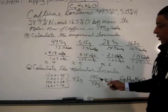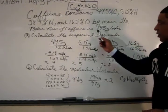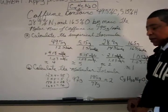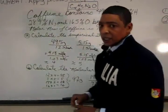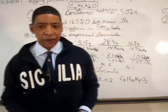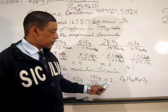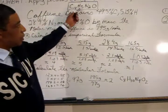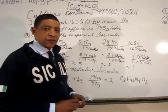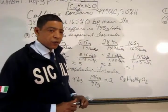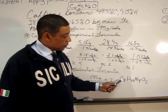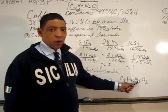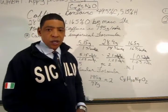To determine the molecular formula, first determine the mass of the empirical formula, which is 97 grams per mole. The molar mass of the molecular formula, 195 grams, divided by the mass of the empirical formula, 97 grams, generates a factor of 2. Distributing this factor through the empirical formula generates the molecular formula C₈H₁₀N₄O₂.